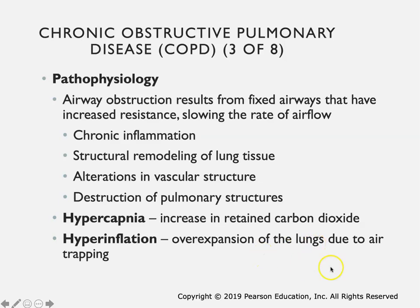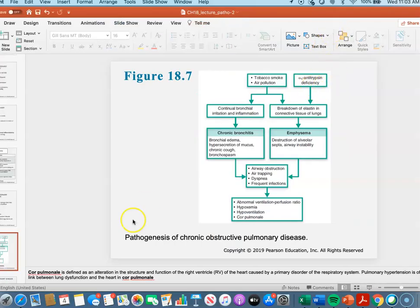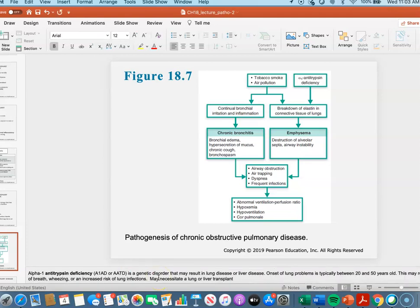Looking at the flow chart - there is a note about alpha-1 antitrypsin deficiency, which is actually a genetic disorder that can result in lung or liver disease and leads to very similar symptoms. There's also a note about cor pulmonale, which is basically an alteration in structure and function of the right ventricle of the heart. Because blood moves from the heart into the pulmonary circulation from the right ventricle, a pulmonary issue often leads to damage to that right ventricle.